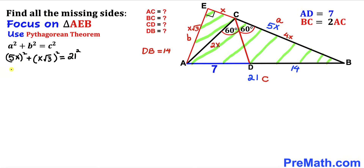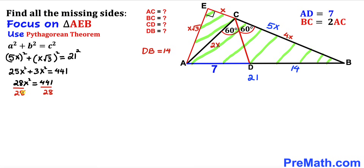Simplifying: 25x² + 3x² = 441. Combining like terms gives 28x² = 441. Dividing both sides by 28 gives x² = 441/28. Taking the square root of both sides, x equals √441 divided by √28, which is 21 divided by √28.